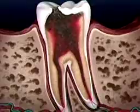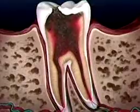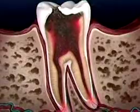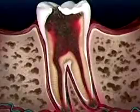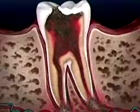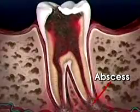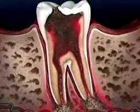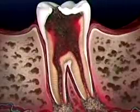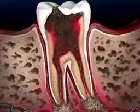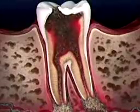Untreated decay may progress from the dentin to the pulp. Because the pulp contains nerves, decay that has reached the pulp often causes a toothache. When decay extends into the pulp, a small sack of pus called an abscess may form, causing intense pain. An infection that has reached the pulp or underlying bone may also cause serious illness by spreading to other parts of the body through the blood vessels in the pulp or the jawbone.